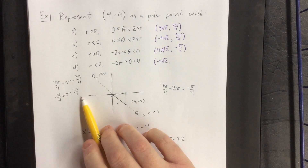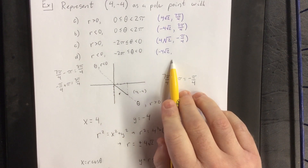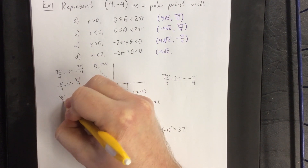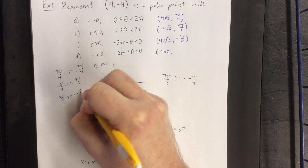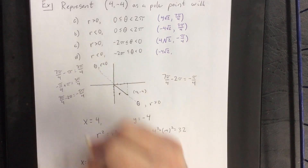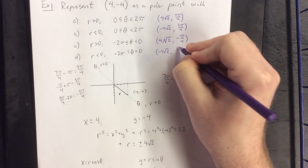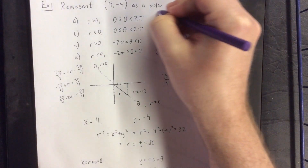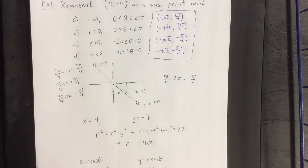Once we have this result, we can find a coterminal angle by subtracting 2π. Taking 3π/4 minus 2π gives us the negative angle associated with this: negative 5π/4. So here we have four different representations for the same Cartesian point, all with different positives and negatives for our theta and r values.